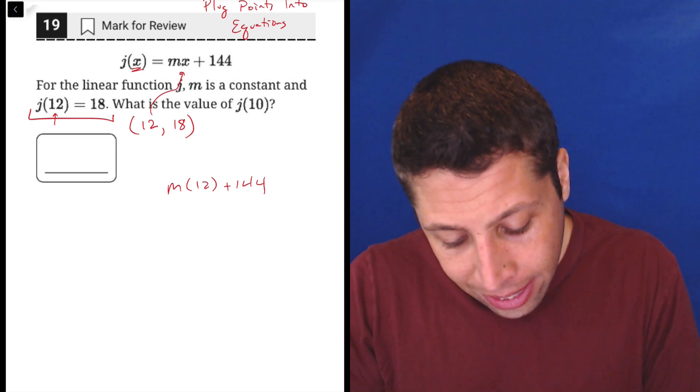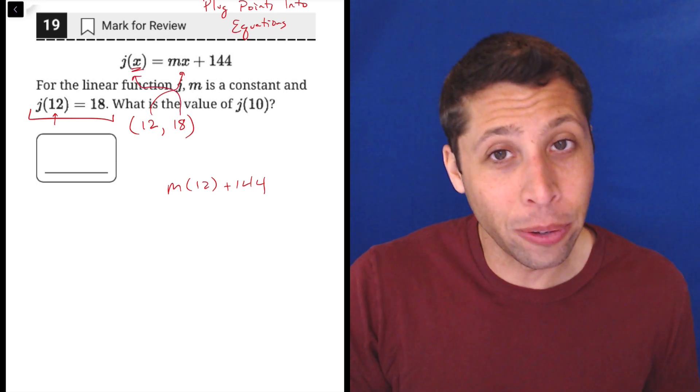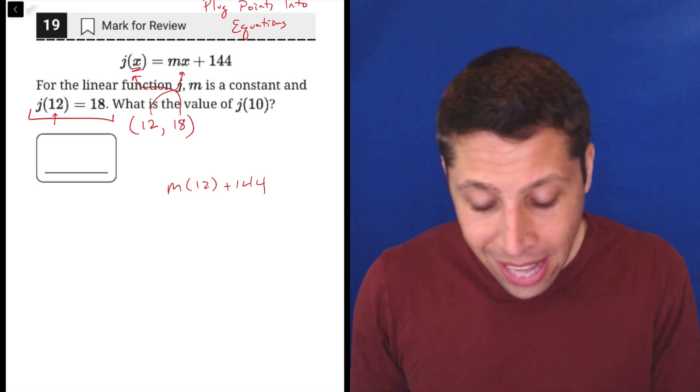Instead, the 18 is going to go on the left side. It's not going in for the x. It's not going in for the j. It's going in for the whole thing, j of x, because that's what y is.